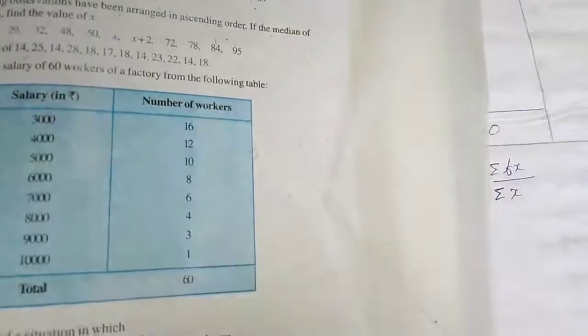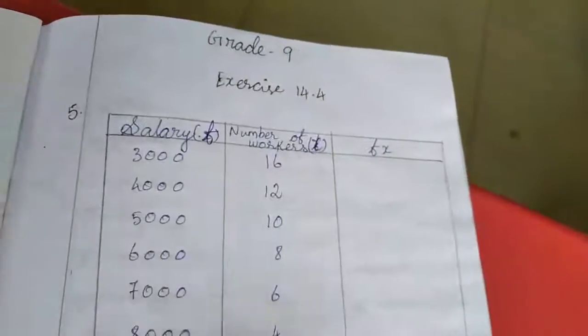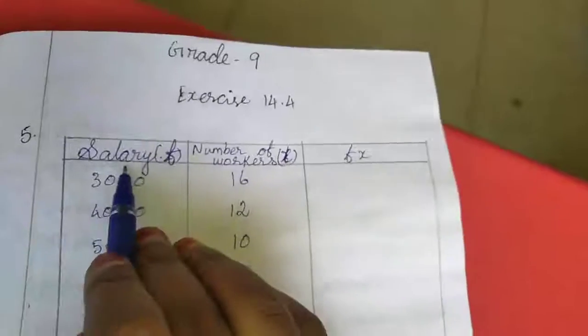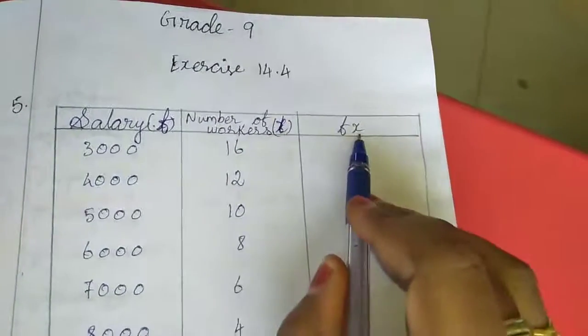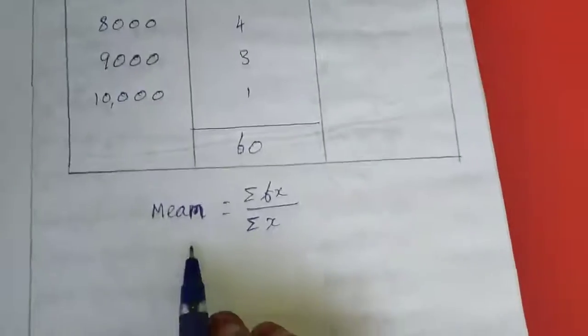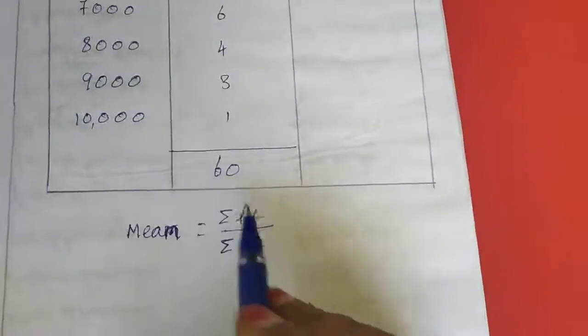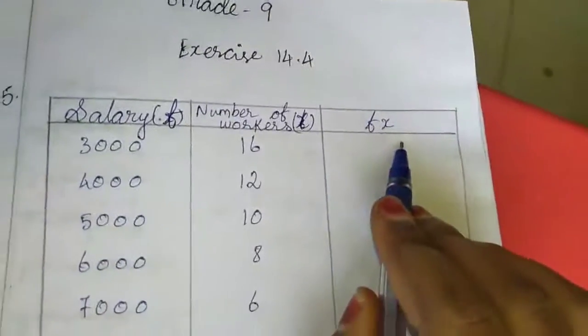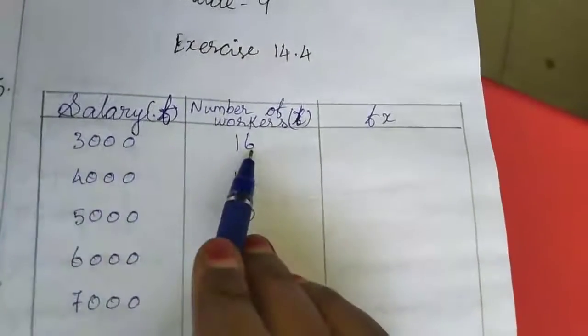Now I am going to work out in a note. What they gave in the book, I wrote the data here. See here, the salary we want to take as f, and the number of workers will be x. We want to find out f times x. The mean value is summation of f times x divided by summation of x, the total number of x. Now I am going to find out f times x. That means we have to multiply these two numbers.